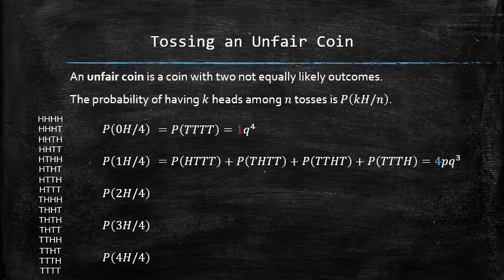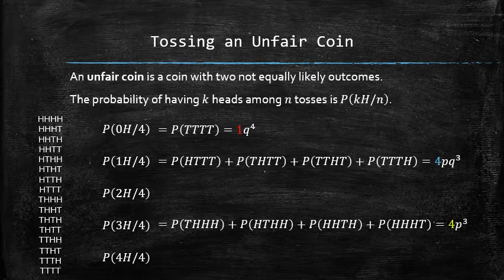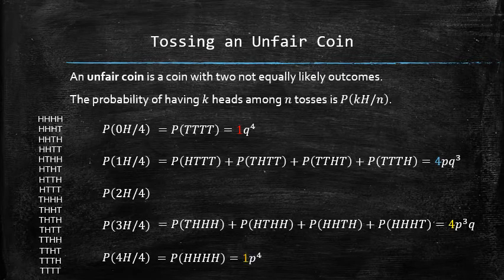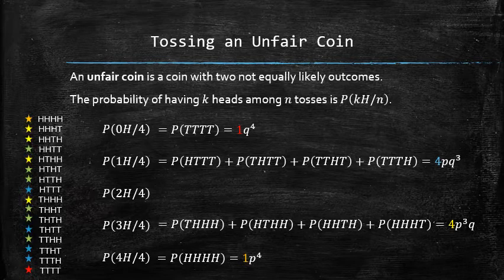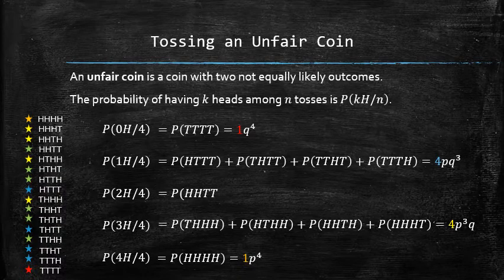Similarly, the probability of having 3 heads among 4 tosses can be found by the special addition rule and is equal to 4·p³·q. And finally, the probability of having 4 heads among 4 tosses is p to the power of 4. It is not hard to recognize the coefficients of these expressions, as we have seen these numbers before. So we can find the probability of having 2 heads among 4 tosses without writing out all simple outcomes.